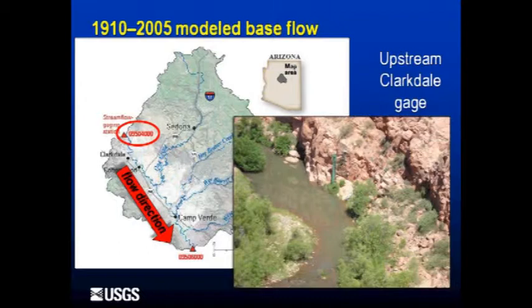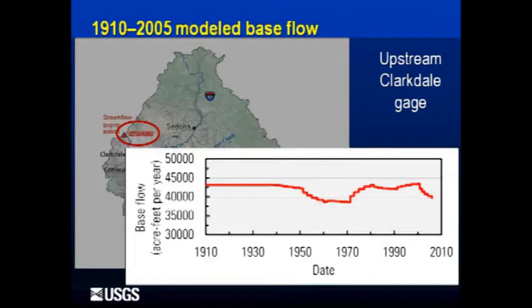We ask the model a series of questions — we conduct experiments. The first is a simple question: model, we find you apt to the task at hand. Would you please tell us what, at the upstream gauge — we call this the Clarkdale gauge, the entrance to the Verde Valley — what was the base flow in the Verde River between 1910 and 2005 as you simulate it? It produces the data, we graph the data, and we see something like this. Time moves along the x-axis and on the vertical y-axis: base flow in acre-feet per year. Note that the graph doesn't start at zero — it starts at 30,000 — so we can tease out and see the differences, the details.